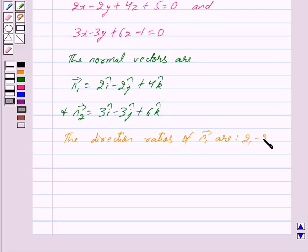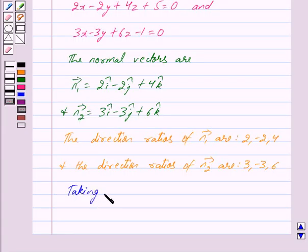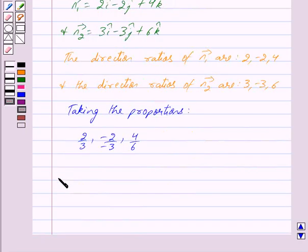2, minus 2, 4, and the direction ratios of vector n2 are 3, minus 3, 6. Taking the proportions we get 2 upon 3, minus 2 upon minus 3, 4 upon 6, or we can write this as 2 upon 3, 2 upon 3, and canceling out common factor 2 from numerator and denominator we get 2 upon 3.